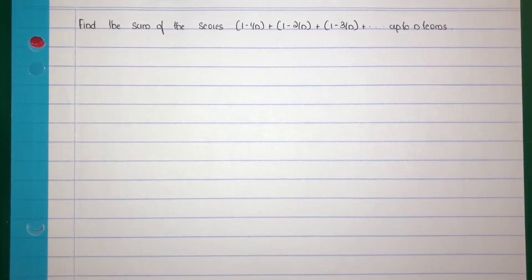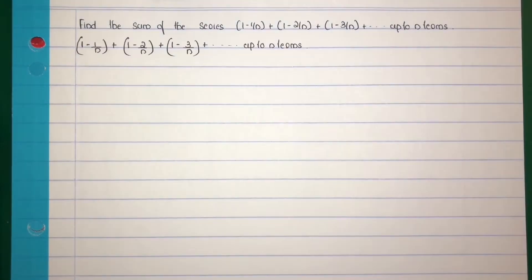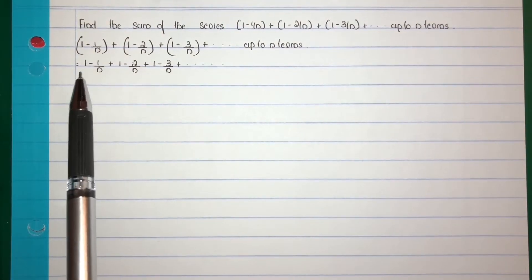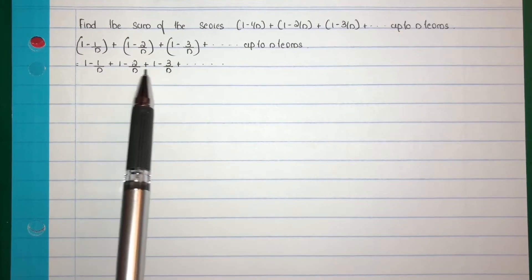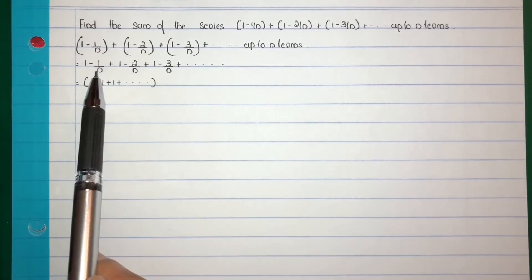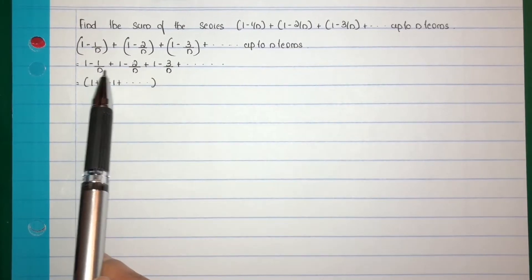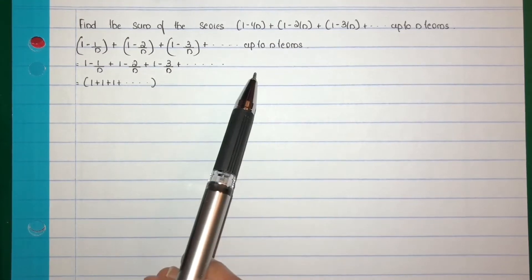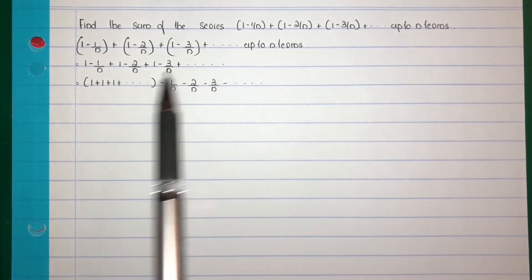Find the sum of the series: 1 minus 1/n, plus 1 minus 2/n, plus 1 minus 3/n, and so on up to n terms. Consider the given series. First, split it equal to 1 plus 1 plus 1 plus etc., minus 1/n minus 2/n minus 3/n etc., up to n terms.